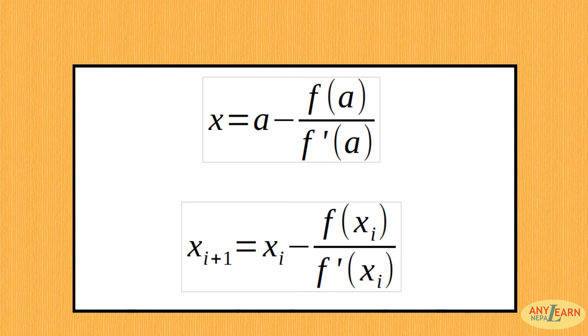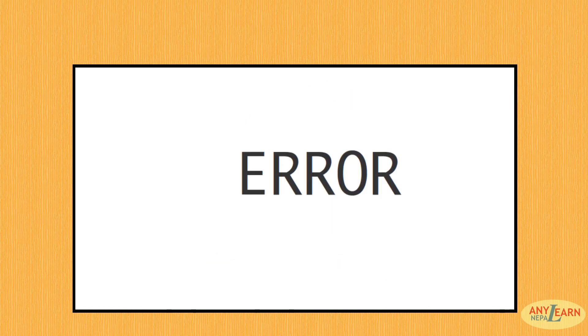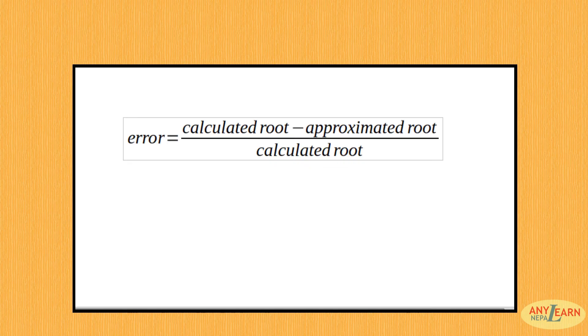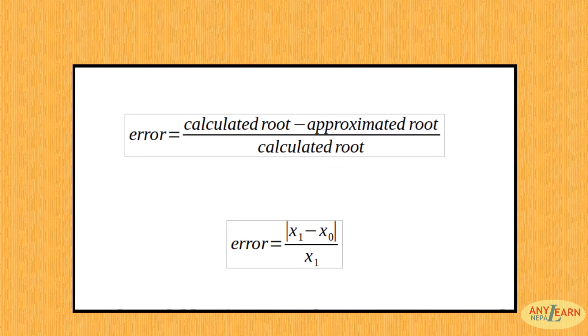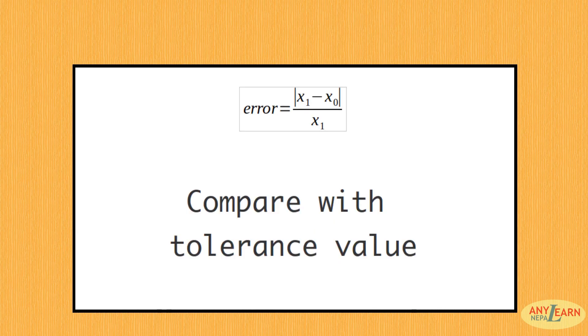On generalizing, we can write x(i+1) equals xi minus f(xi) by f'(xi). In both ways we can derive the formula for Newton's Raphson method. Now let's understand the error in this case. We find relative error as the absolute value of (x1 minus x0) by x1. Then we check this error with the tolerance value after each iteration of Newton's method.